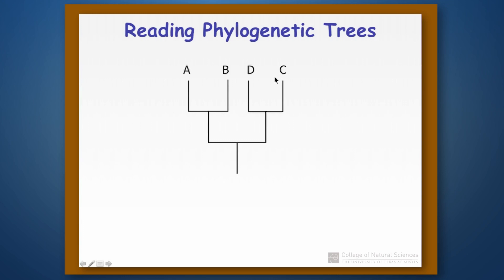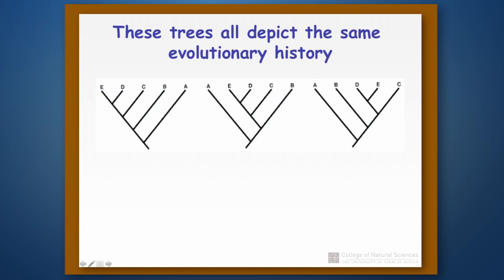Similarly, you could spin the entire tree around the node at the root. So a tree reading A, B, C, D is exactly the same as a tree reading D, C, B, A — all we did was take that original tree and spin it 180 degrees around that node. As an interesting exercise, the three trees on the next slide all depict exactly the same evolutionary history — they're just variations on each other by spinning the tree around different nodes. Pause the video here and work that out for yourself if you'd like.